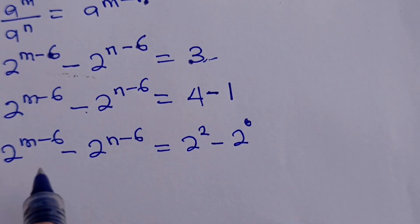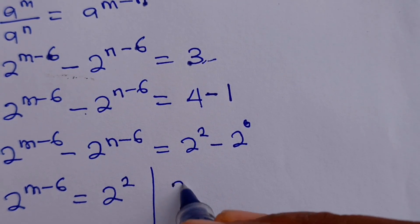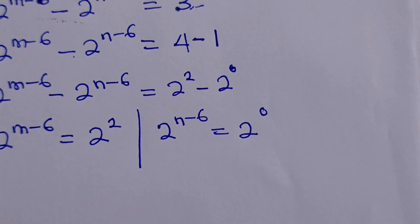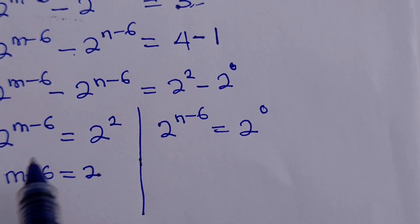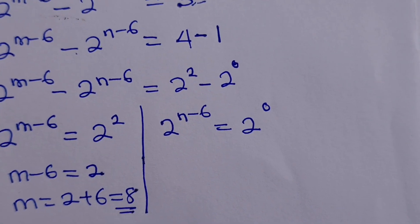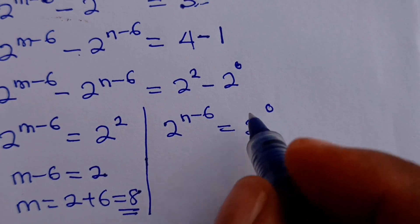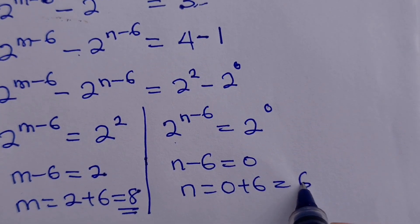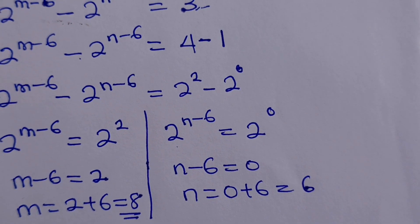Comparing both sides: 2 to the power of M minus 6 equals 2 to the power of 2, and 2 to the power of N minus 6 equals 2 to the power of 0. Since the bases are the same, we equate the powers. So M minus 6 equals 2, giving M equals 8. And N minus 6 equals 0, giving N equals 6. But remember we are not looking for M and N — we need A and B.